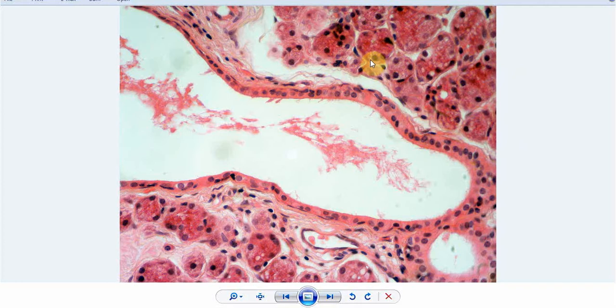In the serous gland, which is the parotid gland, the cells are more darkly stained compared to the mucous cells. The cells are pyramidal in shape, and the nucleus is circular and present at the base of the cell, near the base of the cell.